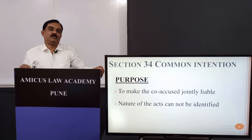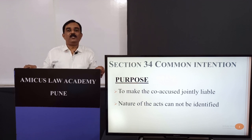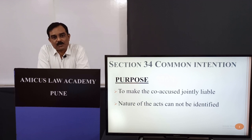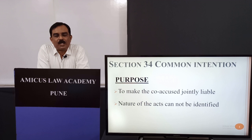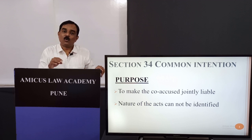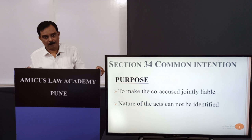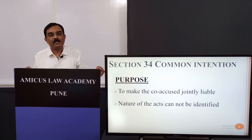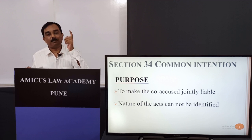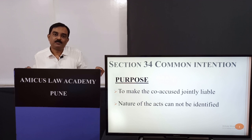There were about 50 attacks made by both persons — 50 blows within a spur of 2 to 3 minutes. Now, who attacked which part of the body — it is very complicated and very difficult to differentiate or identify the acts, to identify who attacked which part of the victim's body. This cannot be done.